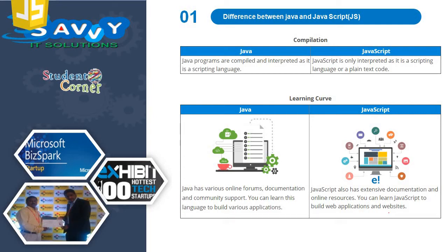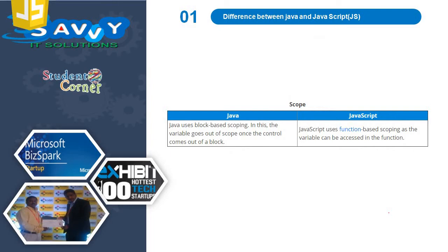Regarding the learning curve, Java has various online forums, documentation and community support. You can learn this language to build various applications. Regarding scope, Java uses block-based scoping — the variable goes out of scope once the control comes out of the block. JavaScript uses function-based scoping, where the variable can be accessed anywhere in the function.